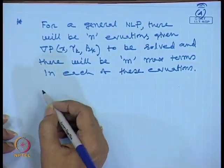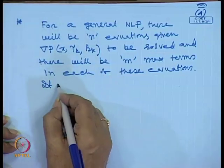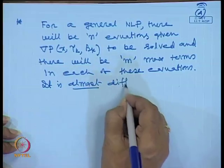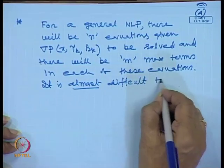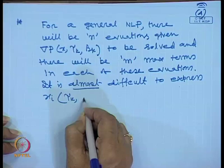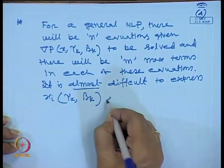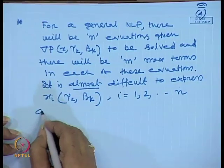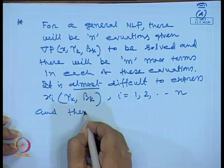Recalling our earlier problems: the exterior penalty function method generates a sequence of infeasible solutions which converge to a feasible and optimal solution. Whereas in the case of the interior penalty function method, it generates a sequence of feasible solutions that ultimately converge to a feasible and optimal solution. This is the key difference between the two methods.